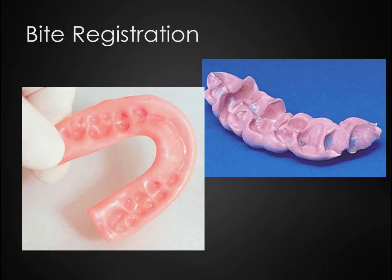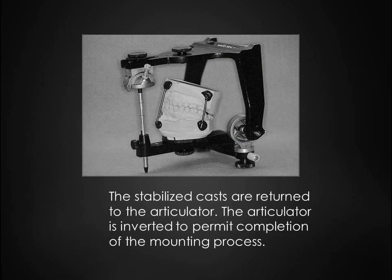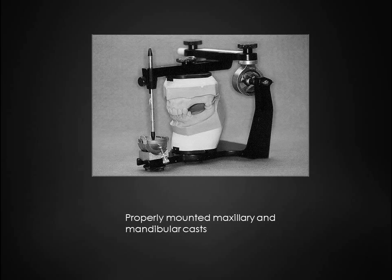Once the casts are properly articulated, they are stabilized using rubber bands or other methods prior to mounting the mandibular cast. The stabilized casts are then returned to the articulator, and the articulator is inverted to permit completion of the mounting process. This slide shows the properly mounted and finished casts.